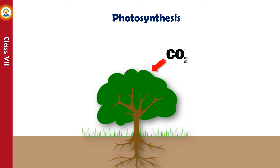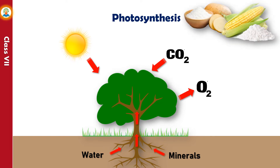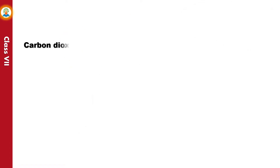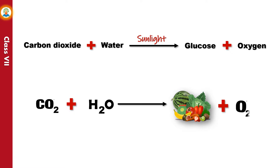Plants take in carbon dioxide from the surrounding air. Water and minerals are absorbed by the roots and transported to the site of photosynthesis. Plants use solar energy to convert carbon dioxide and water into glucose and oxygen. This oxygen is released into the air. The glucose is stored in the form of starch in leaves and in other parts of the plant.